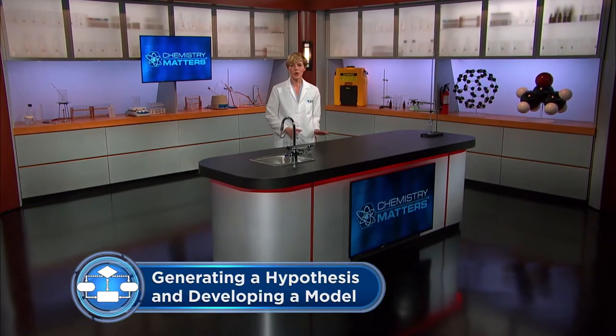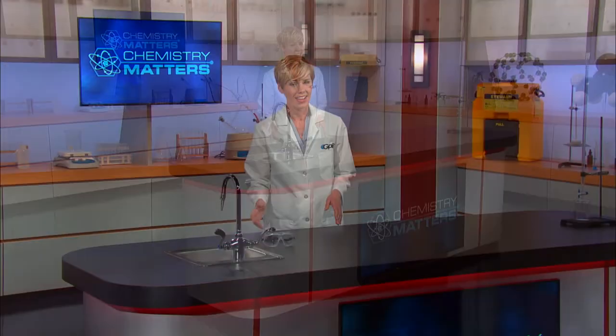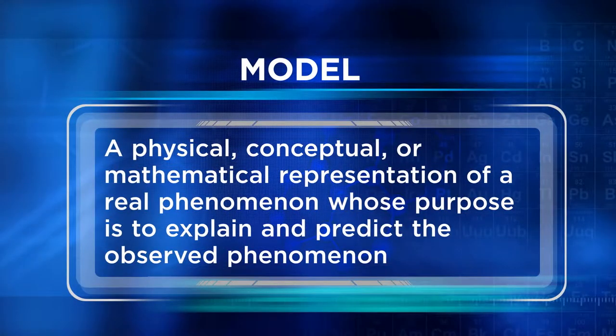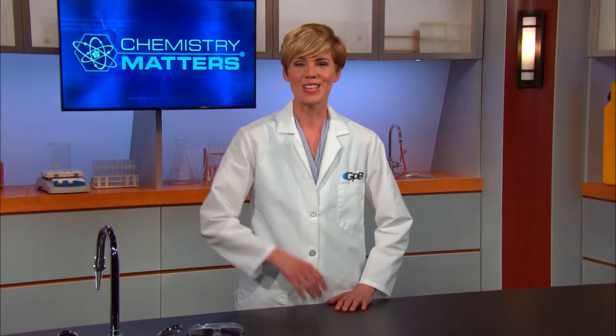Welcome to Chemistry Matters. In this unit, we're going to focus on different models of the atom and their connection to the periodic table. A model is a physical, conceptual, or mathematical representation of a real phenomenon whose purpose is to explain and predict the observed phenomenon. Scientists use observations and data from experiments to develop models, and models can change over time with new information. So let's visit our classroom to learn about models of the atom.